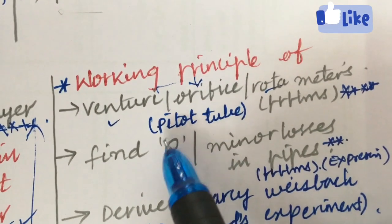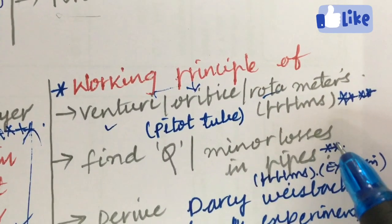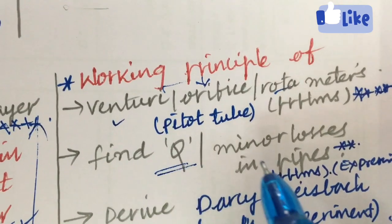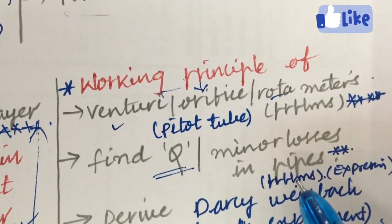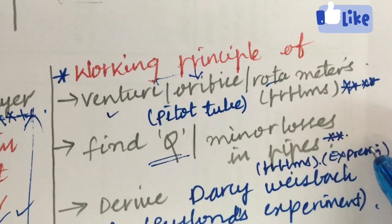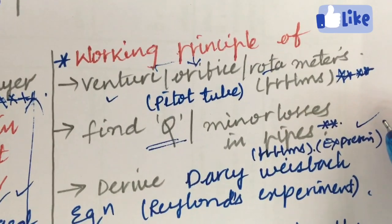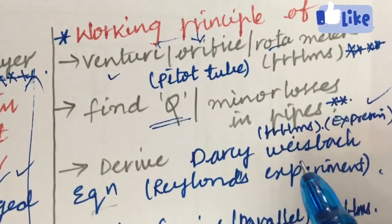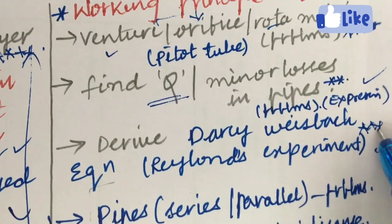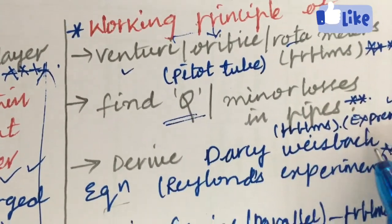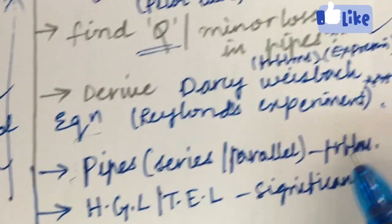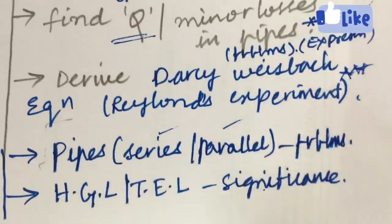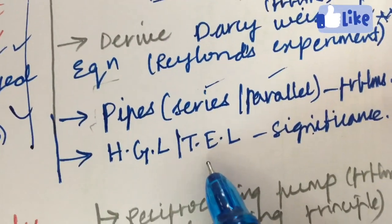Problems related to minor losses in pipes — like sudden contraction, sudden expansion, and finding the discharge Q in pipes — are also very important gunshot questions. The expressions related to minor losses in pipes are also very important to derive. Darcy-Weisbach equation using Reynolds' experiment gives the head loss, and the related problems are important. There may also be problems related to pipes in series and parallel, as well as questions on the significance of the hydraulic gradient line and total energy line.